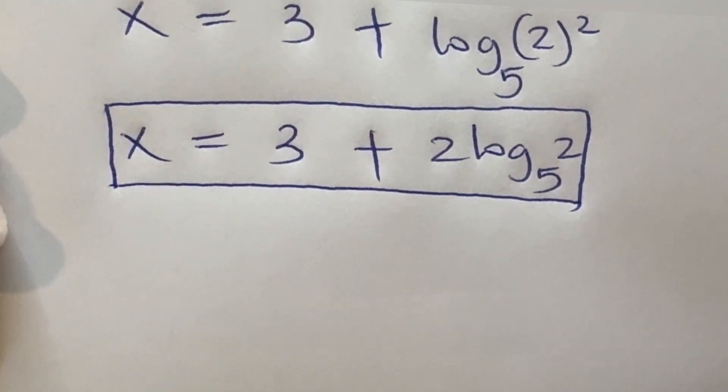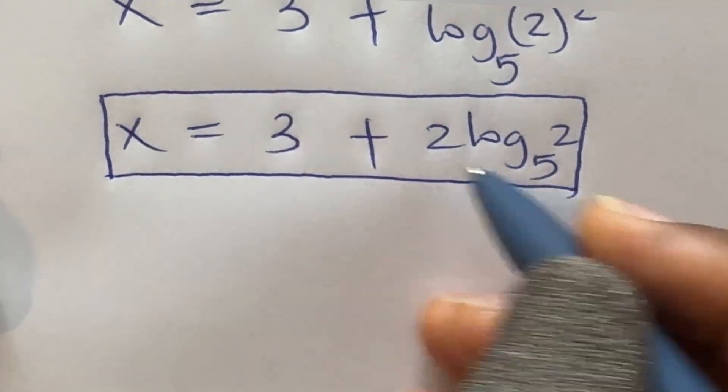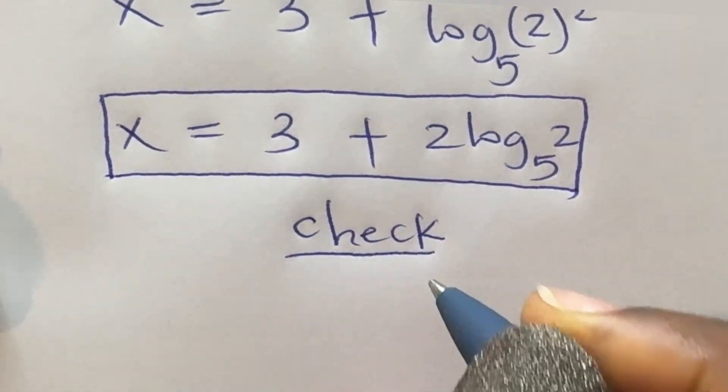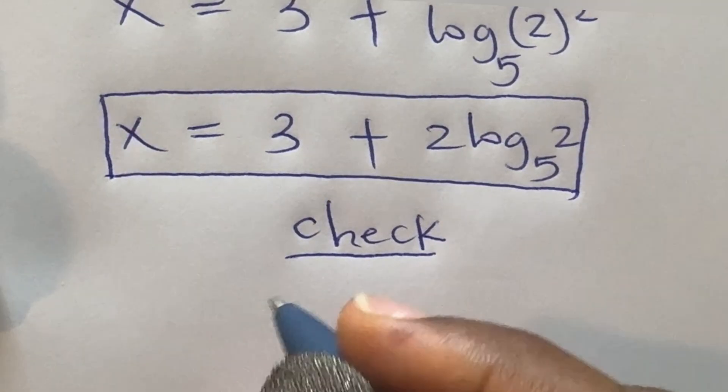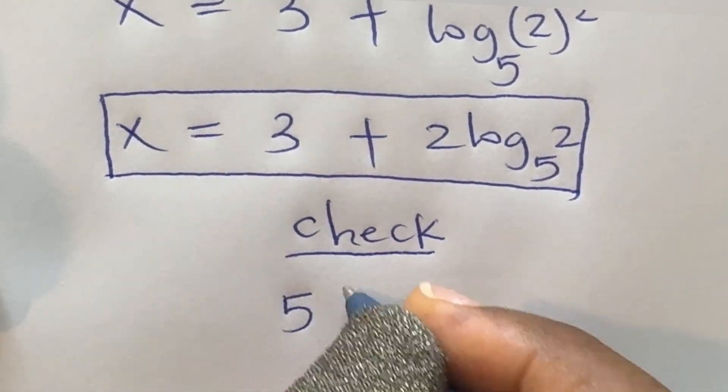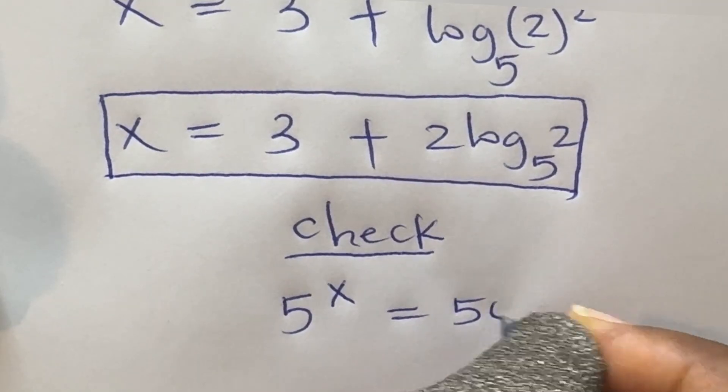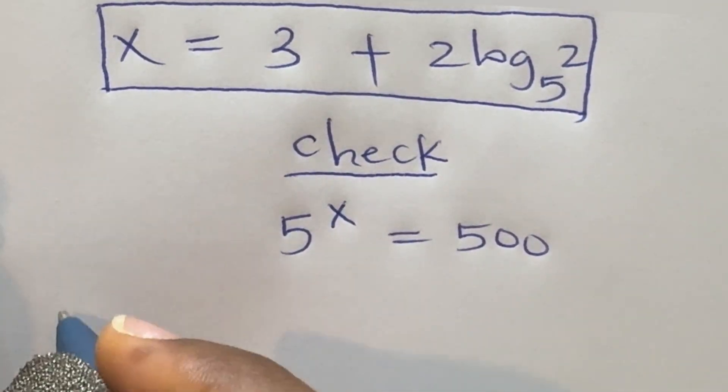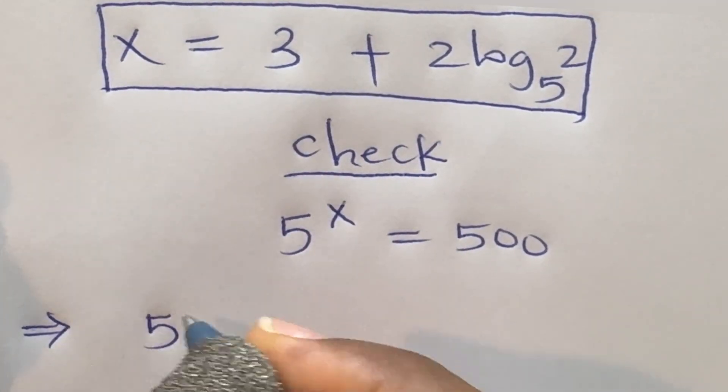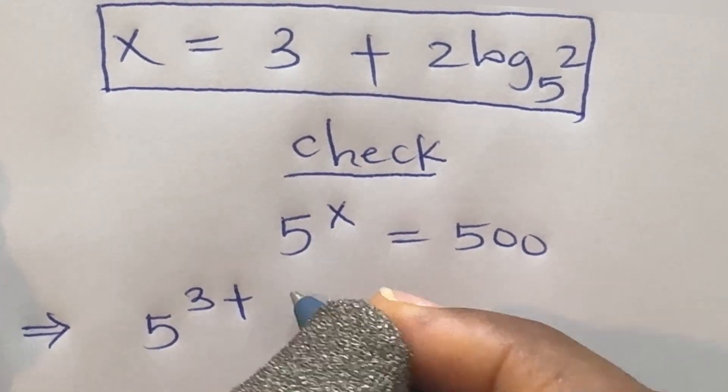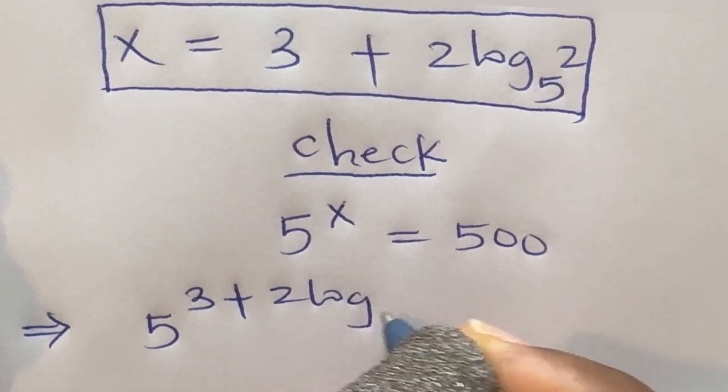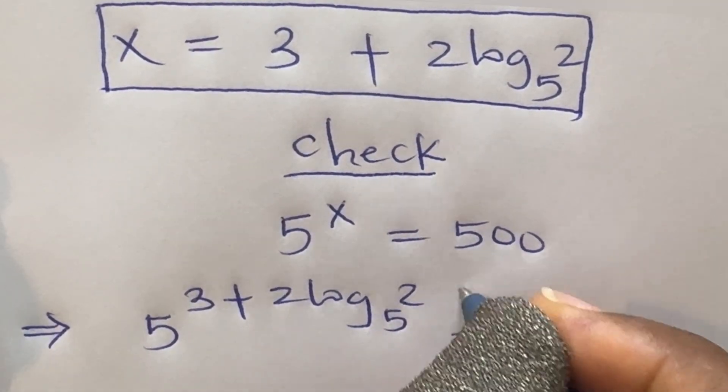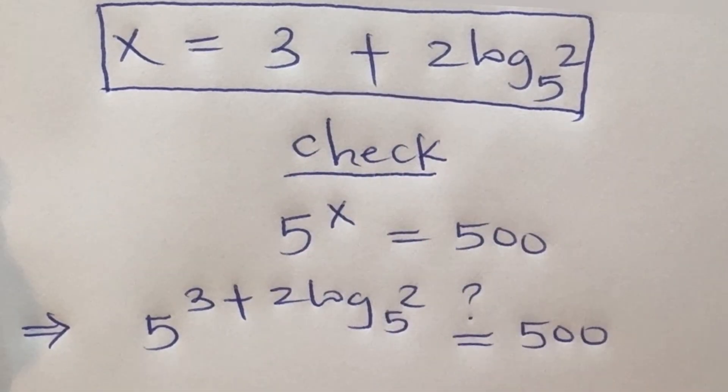Let us now check that this is correct. We'll substitute this value into the original equation: 5 raised to power 3 plus 2 log 2 base 5 should give us 500 if our solution were to be correct.